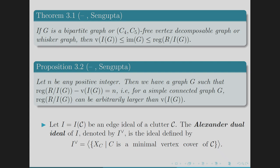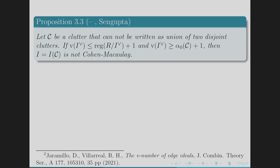The Alexander dual of a square-free monomial ideal is constructed from the primary decomposition and is also known as the cover ideal. If V(I(C)^∨) ≤ reg(R/I(C)^∨) + 1 and V(I(C)^∨) ≥ α(C) + 1 (where α(C) is the vertex covering number), then I(C) cannot be Cohen-Macaulay. This gives a relation between Cohen-Macaulayness and the V number of a square-free monomial ideal.